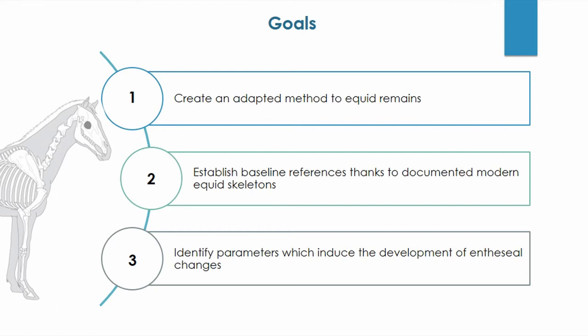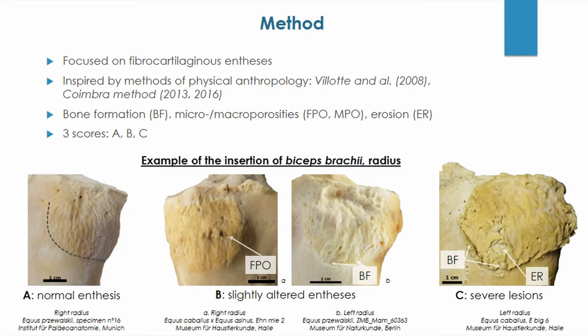Thanks to previous research on this topic and veterinary data, it is possible to create a recommended method adapted to the analysis of horse bones. An important part of this work is the establishment of a baseline reference sample thanks to documented modern skeletons. This sample will permit the identification of etiologies that modify the appearance and development of insertion sites. Our method is focused on fibrocartilaginous entheses and is inspired by recent macroscopical methods published during the last decades for human remains. Observations made on a Turkish equid skeleton contributed to the creation of a recording method specific to horses.